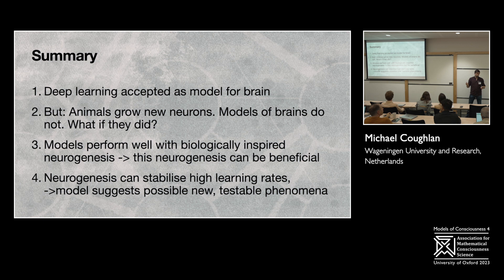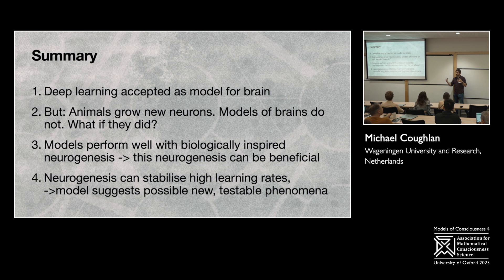So just in summary, deep learning has been more accepted for a model of the brain. Animals grow new neurons. Models of brains don't. What if they did? Just from some very simple experiments, we show that the models can actually perform pretty well with biologically inspired neurogenesis, and that it can be beneficial. And that also it's possible from these experiments that neurogenesis can stabilize higher learning rates. And the important thing here for a mathematical approach to consciousness is that looking at both the biology and a minimal model that we can analyze in detail, we can come up with new possible testable phenomena.